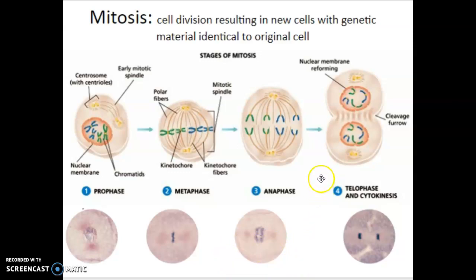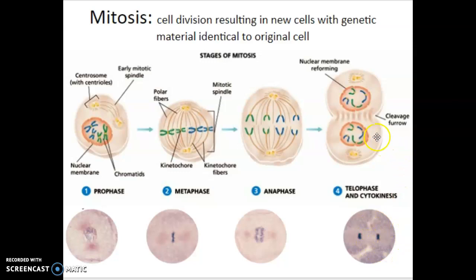The last phase of mitosis is telophase, where the chromosomes, having reached their own pole of the cell, start to unpack a little bit, the nuclear envelope reforms, and we're basically done moving the chromosomes and DNA.